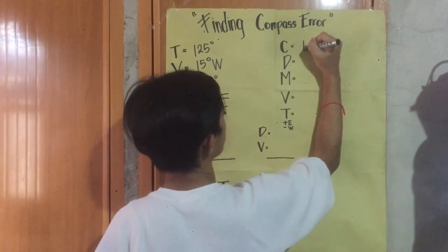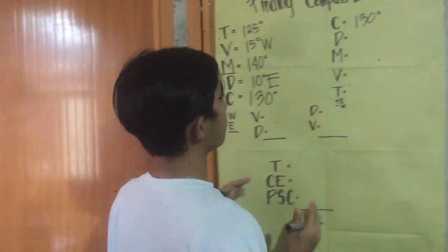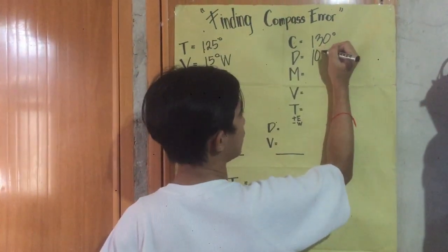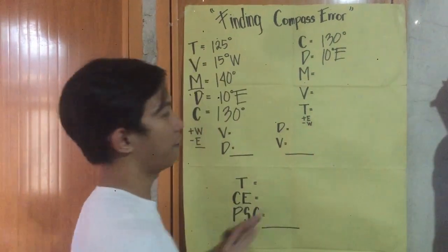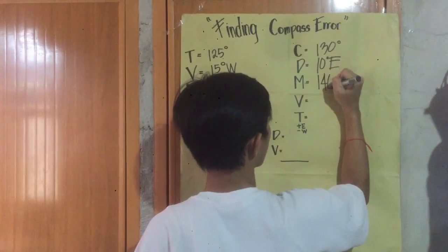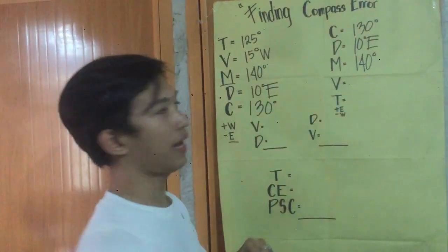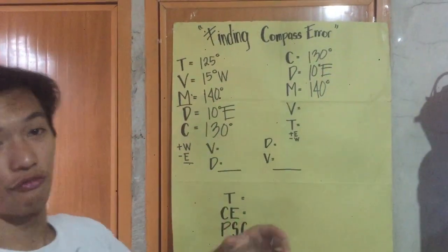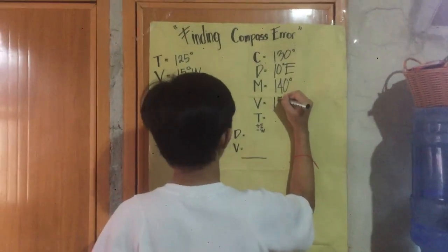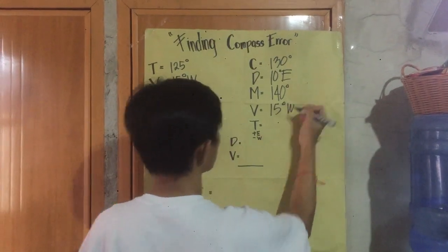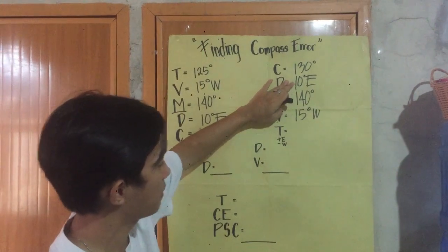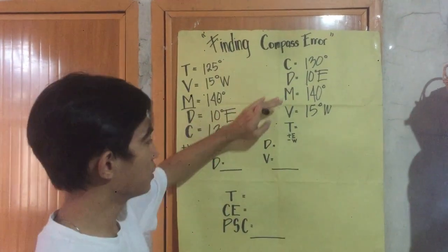Now we'll do it in the opposite way. So if we have 130 degrees per ship's compass and a deviation of 10 degrees easterly, we will have a magnetic of 140 degrees. And if we have a variation of 15 degrees west...